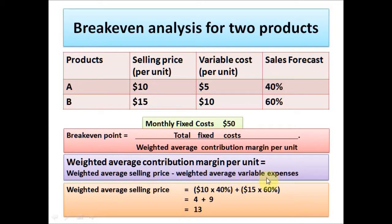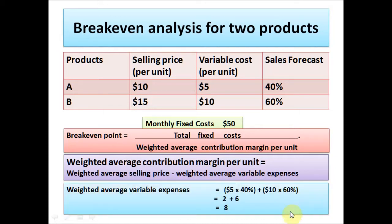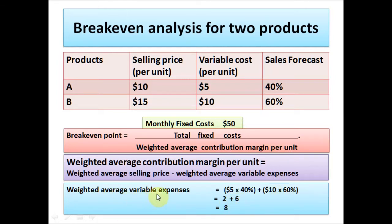Now we need to calculate the weighted average variable expenses. You take the $5 variable cost for product A and multiply by the 40% sales forecast, so $5 times 40% is 2. Then for product B, the variable cost is $10, and the sales forecast is 60%, so 10 times 60% is 6. So 2 plus 6 is 8 — that is the weighted average variable expenses.